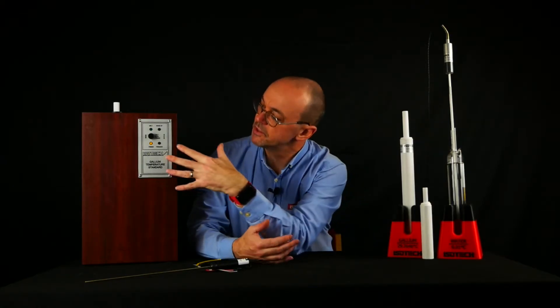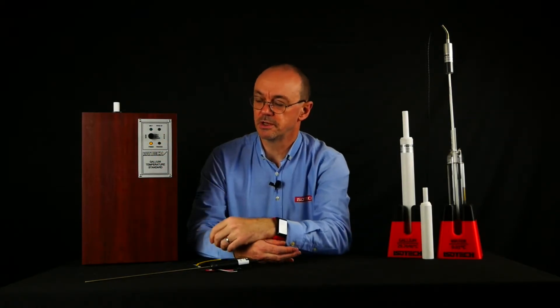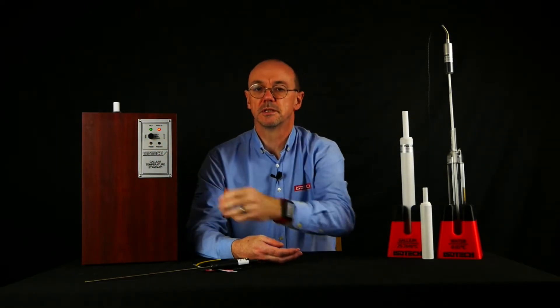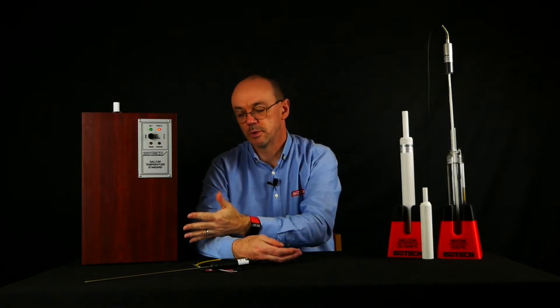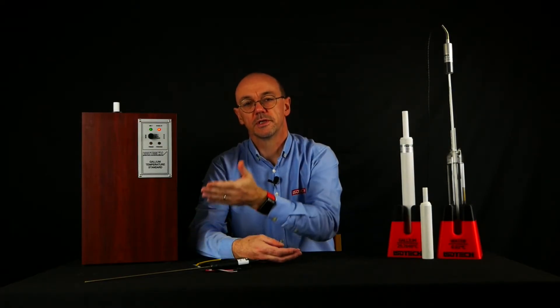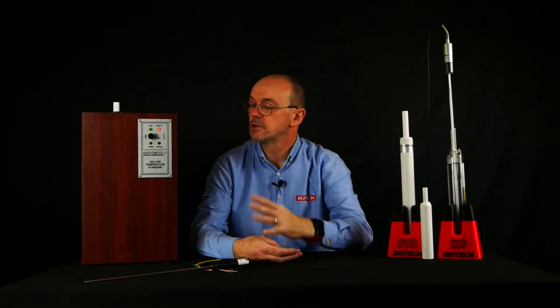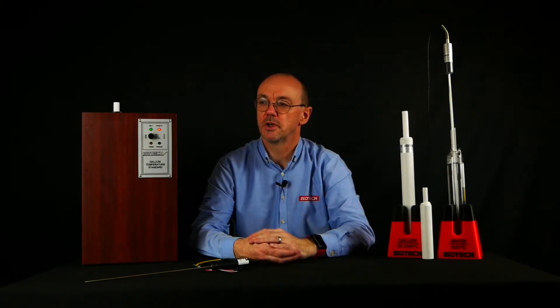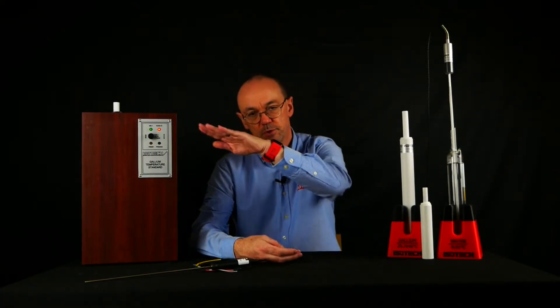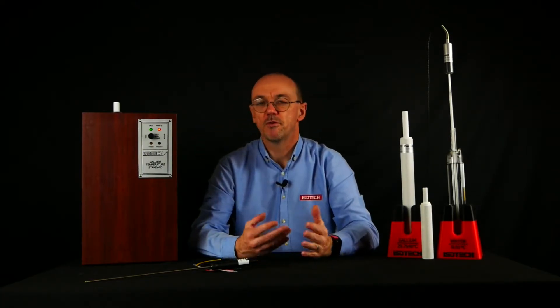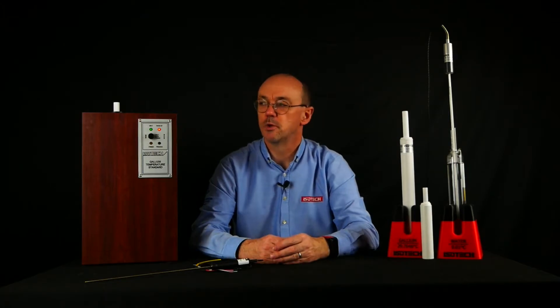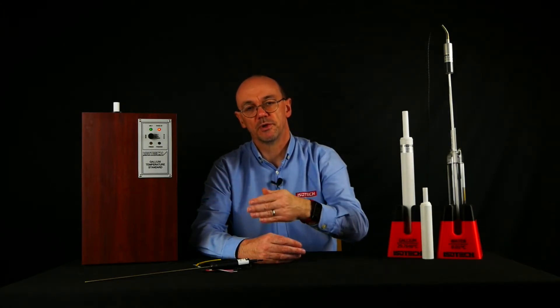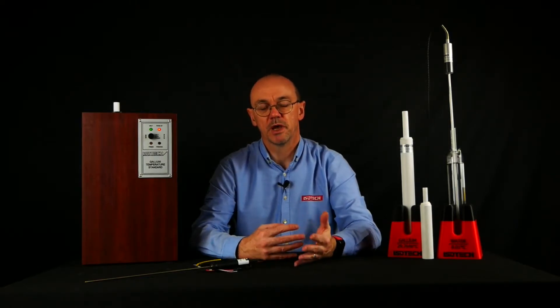At the moment the metal is solid. To use it, I simply change the control from freeze to melt, and the apparatus will heat up to a certain temperature to start to make the metal melt, to change to a liquid from a solid. As that starts to happen, temperature is automatically lowered. We'll have a period, maybe 12 to 14 hours, where the gallium inside the cell is going through the phase transition and we have the reference point.